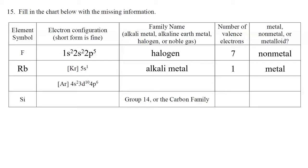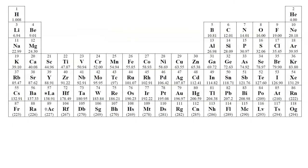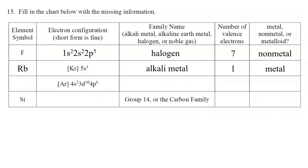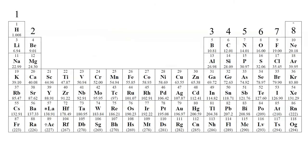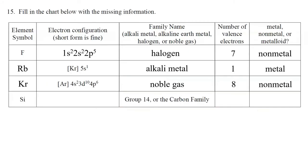For the next element, the electron configuration is [Ar]4s²3d¹⁰4p⁶. Starting from argon's 18 electrons: 18 + 2 + 10 + 6 = 36 electrons total. We're looking for element with atomic number 36, which is krypton. Krypton is a noble gas, has 8 valence electrons, and is classified as a nonmetal.